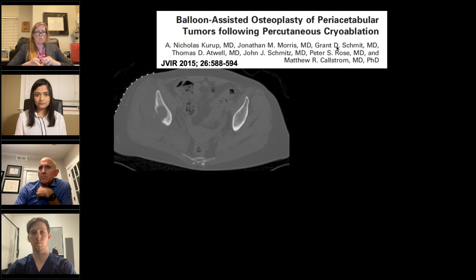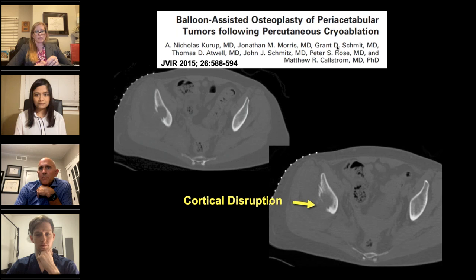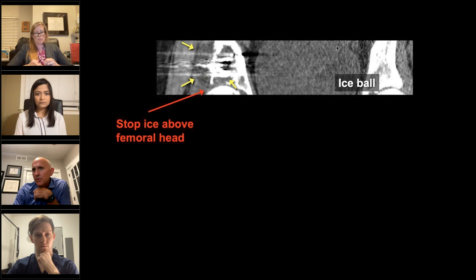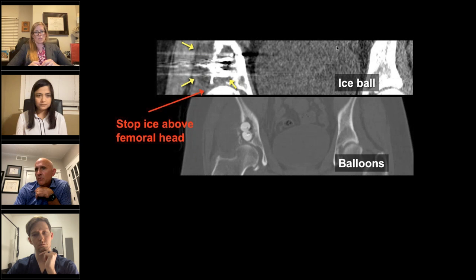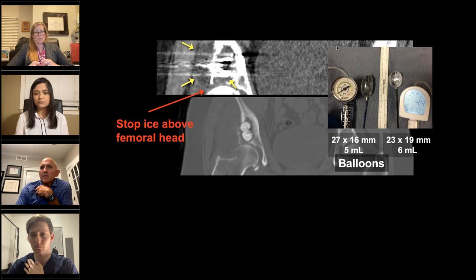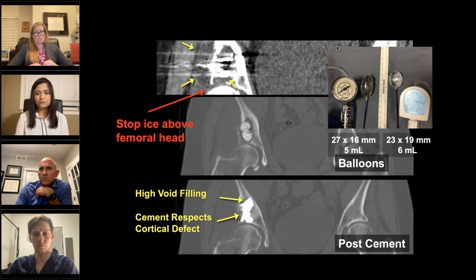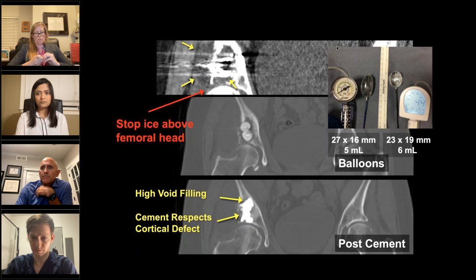Lastly, here's an augmentation case outside the spine. There's a metastatic lesion in the periacetabular region on the right with cortical disruption. This was treated with cryoablation to kill the tumor, with the ice followed closely so it doesn't get into the femoral head. We followed this with kyphoplasty balloons to re-expand the space where the cement is going to go — and you get excellent void filling with cement, achieving a good column between the acetabular roof and the intact ileum above it.